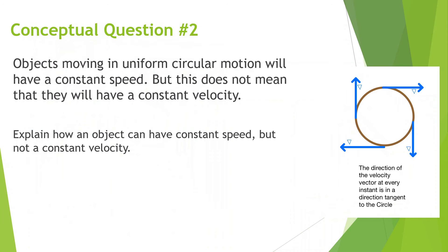Alright, let's continue. Objects moving in uniform circular motion will have a constant speed, but this does not mean that they will have a constant velocity. Explain how an object can have a constant speed but not a constant velocity. This may seem a little confusing.